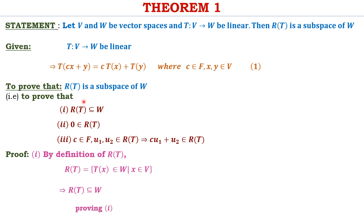To prove R(T) is a subspace of W, we need to verify three conditions: first, R(T) is a subset of W; second, the additive identity 0 belongs to R(T); and third, for C belonging to F and elements U1, U2 belonging to R(T), we need to show that CU1 plus U2 also belongs to R(T). Proving these three conditions establishes that R(T) is a subspace of W.